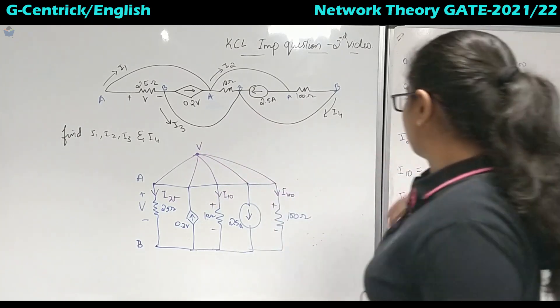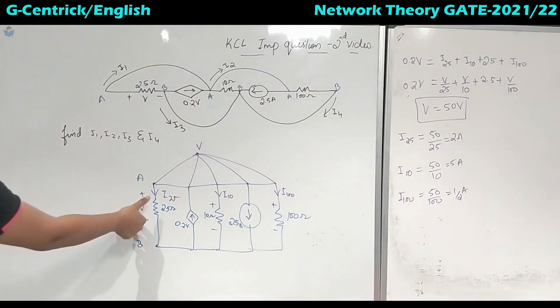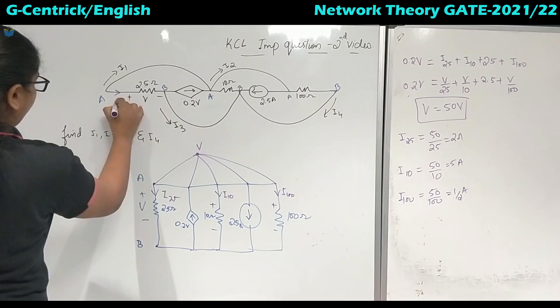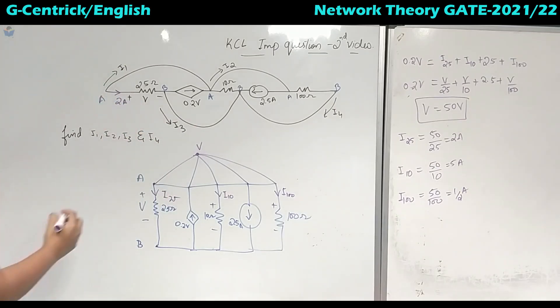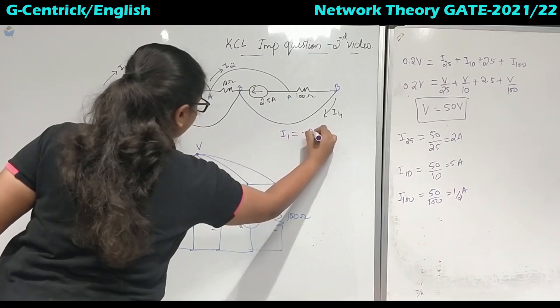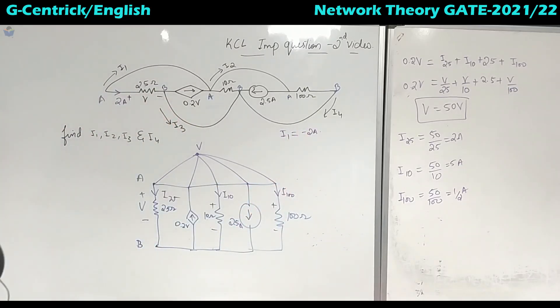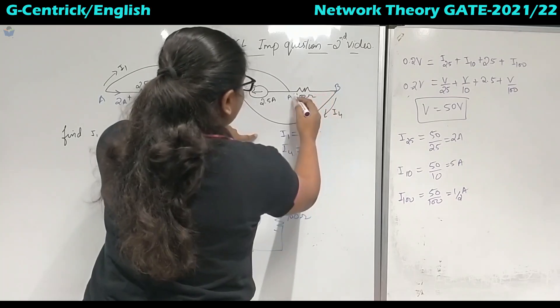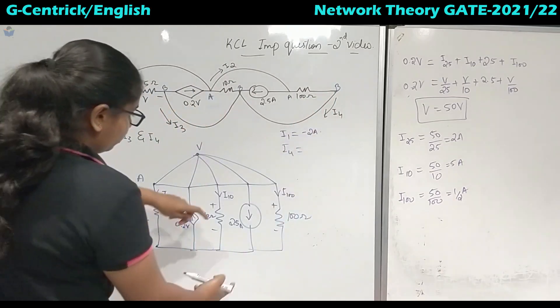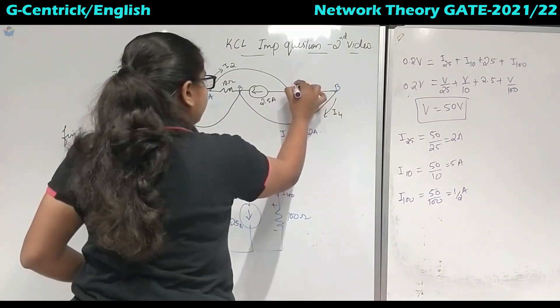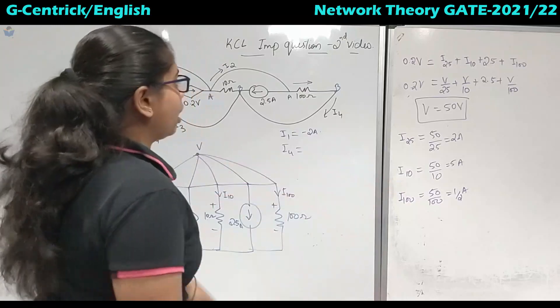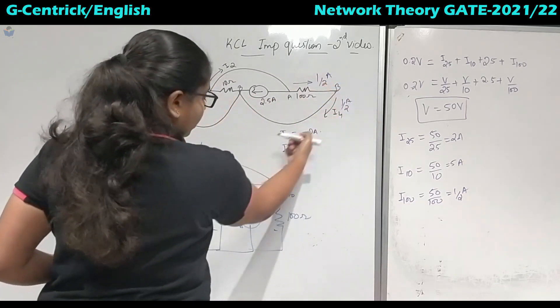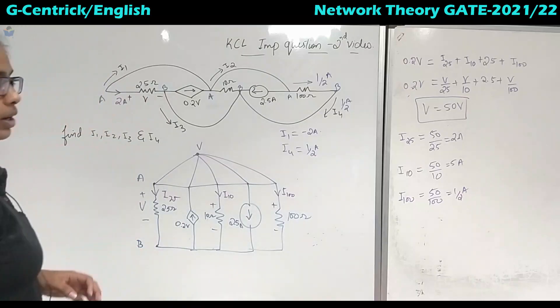But this is not the final answer. You have got I25. So here coming back to this diagram, I25 is here, going from plus to minus. So the current here will be 2 amperes. Both are outgoing and then the value of I1 will be equal to minus 2 amperes. Now for calculating I4, this is the 100 ohm. The current is going from A to B in this direction. How much is I100? Half ampere. So here also it will be half ampere. Incoming equal to outgoing.